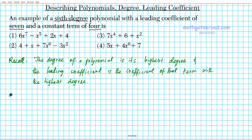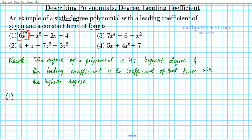Let's start with option one. We want to find the degree first, because that will help us determine what the leading coefficient is. Option one has four terms. Looking at the powers — degree seven, five, one, and zero (constant term). The term 6x to the seventh has the highest degree, so the degree of that entire polynomial is seven.